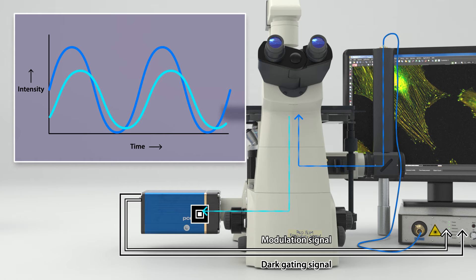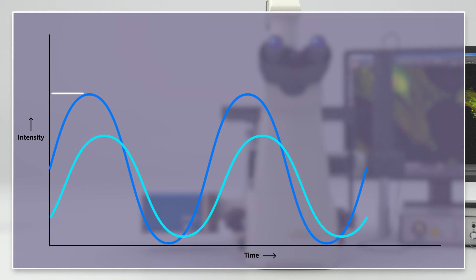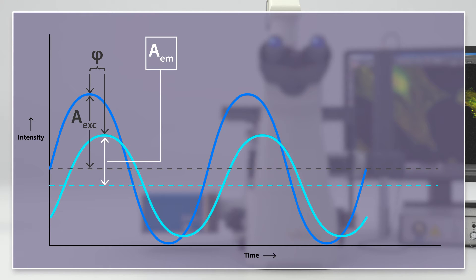By comparison of the excitation and emission sinusoids, the time or phase shift can be determined. The phase angle phi. Also the excitation and emission amplitudes, A-excitation and A-emission become clear. And the constant components, B-excitation and B-emission.